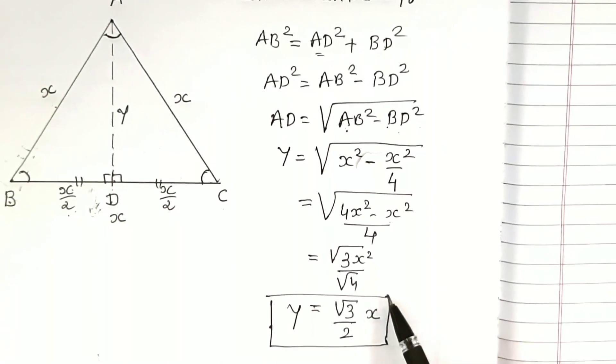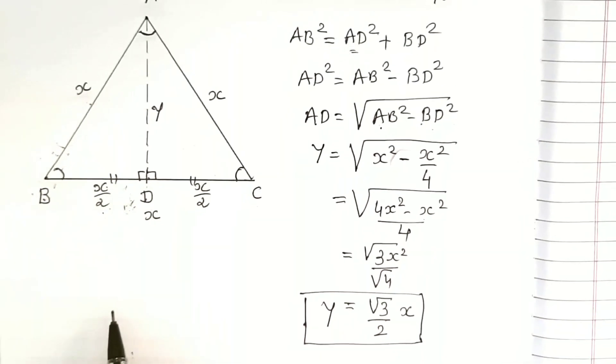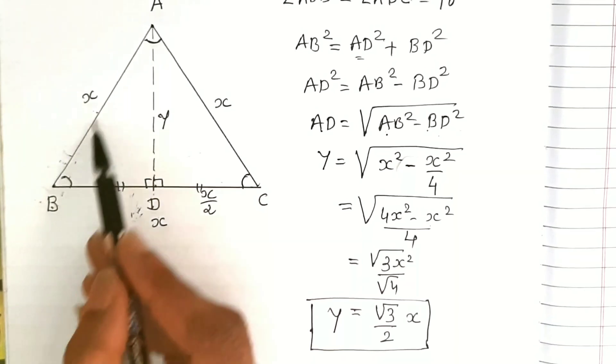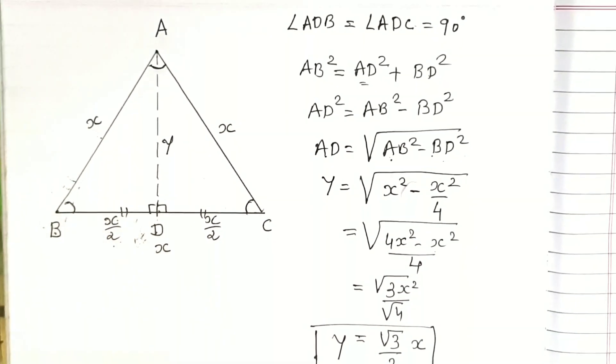Now we need to find the area of half of the triangle, half of the equilateral triangle, that is a right angled triangle, then we'll multiply it by 2.